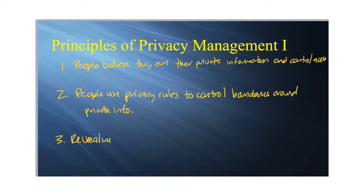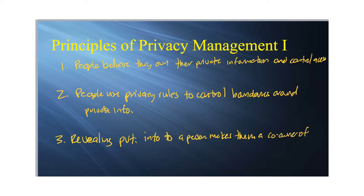The third principle is that revealing private information to a person makes them a co-owner of it. The minute you tell a secret to someone, that person becomes responsible for the care and protection of that information from the perspective of the original discloser. Once you put information in someone's hands, it is their job to care for it and protect it. We can all think of situations where a friend went and told somebody else — we'll get to that.